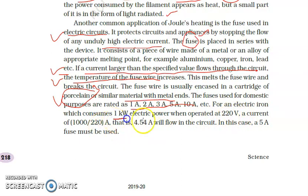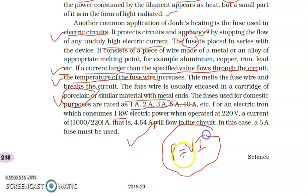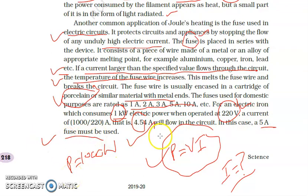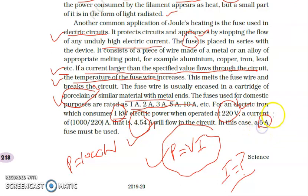For an electric iron which consumes 1 kilowatt of energy, we can use the formula P = V × I to calculate the current. Power is 1 kilowatt which is 1000 watts, and the voltage is 220 volts. Applying the formula, the current flowing in the circuit is 4.54 ampere. This means we must use a fuse of 5 ampere, because if we use a fuse rated less than 4.54 ampere it will melt. That is why a 5 ampere fuse is used for this particular current requirement.